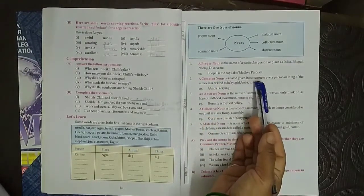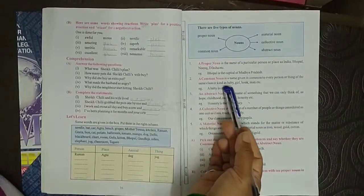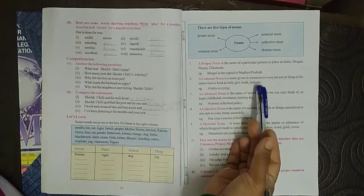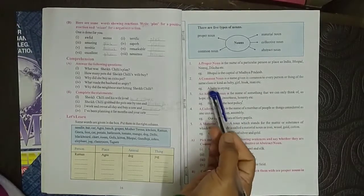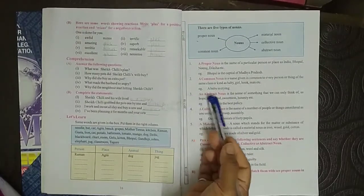Second is a common noun. It is a name given in common to every person or thing of the same class or kind, like baby, girl, book, man, etc. Example of that is: a baby is crying.